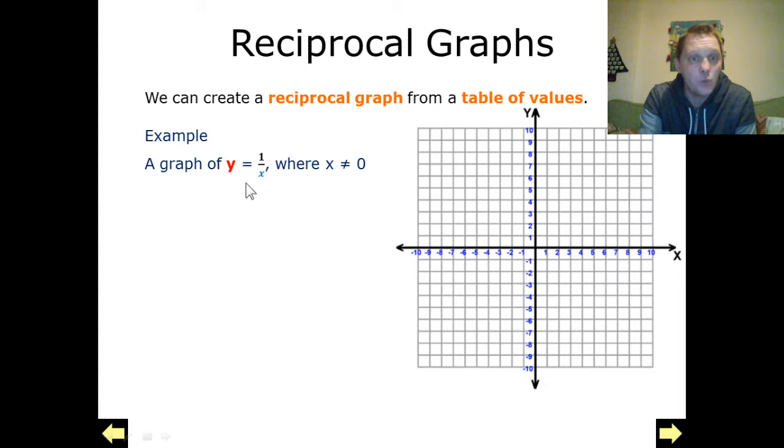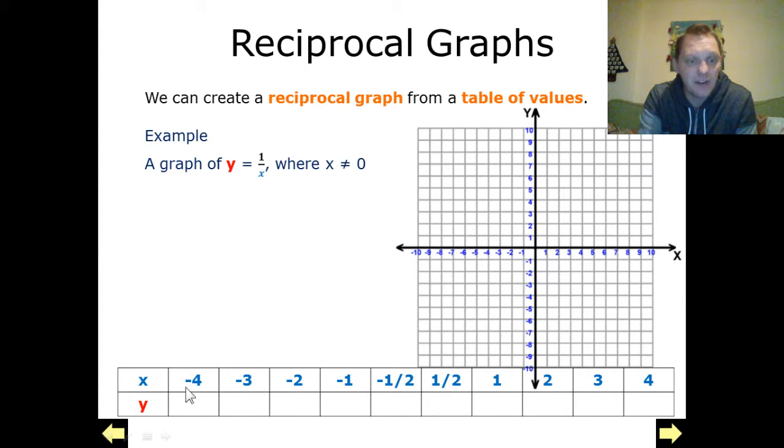So here's our equation, y equals 1 over x, where x does not equal 0. So here's our table of values, with x values ranging from minus 4 up to 4. Well, I've also included minus a half and a half in there as well. That's because the closer it comes to this, the more defined curve it's going to allow me to get once I plot this.